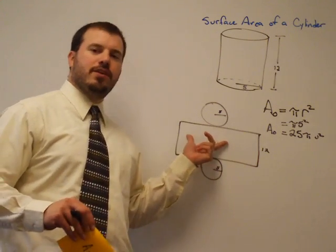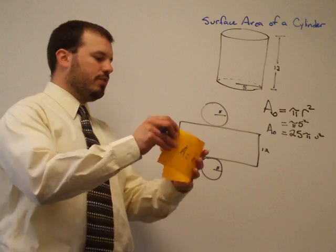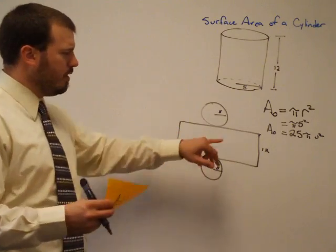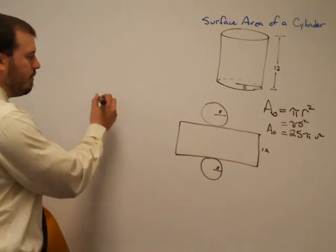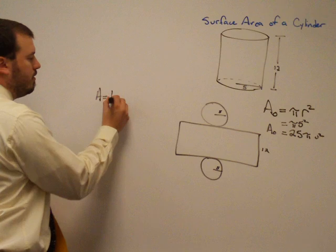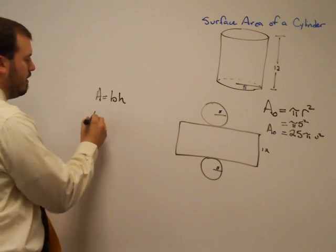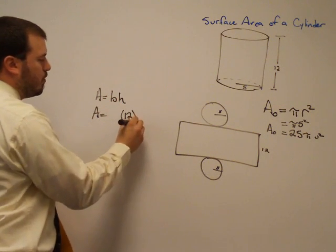I just need to find the area of this lateral area, which is the curved surface. We know one of the dimensions. To find the area of any rectangle, it's just equal to the base times the height. The height, we know is 12.